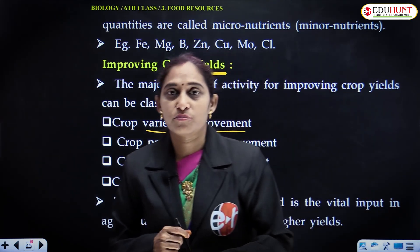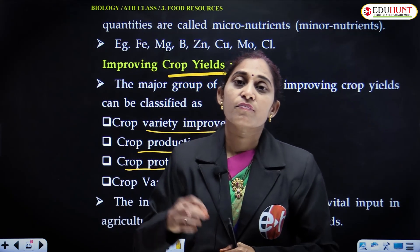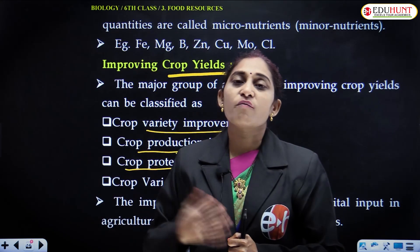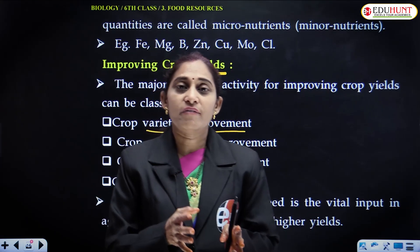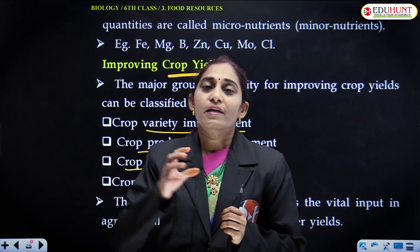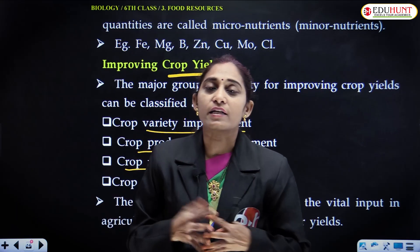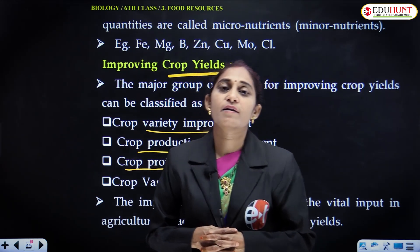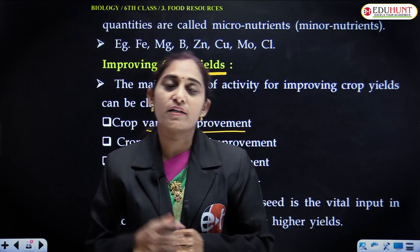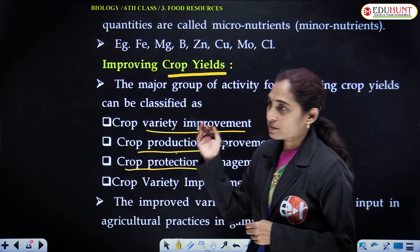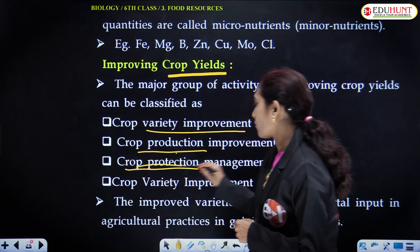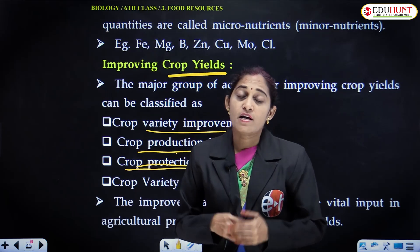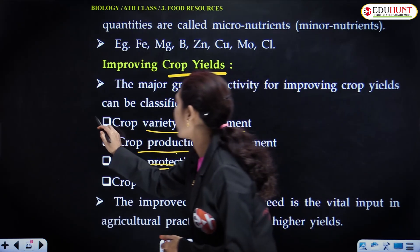Crop protection management involves how to protect a crop from certain diseases, certain pests, certain organisms, and certain microbes. That is very important. If we cultivate the best quality crop but it is prone to certain disease, ultimately the farmer may get a loss. That is why, to financially minimize the loss and to avoid such losses, scientists produce crop varieties that are resistant to particular pests and diseases. These three points are very important.